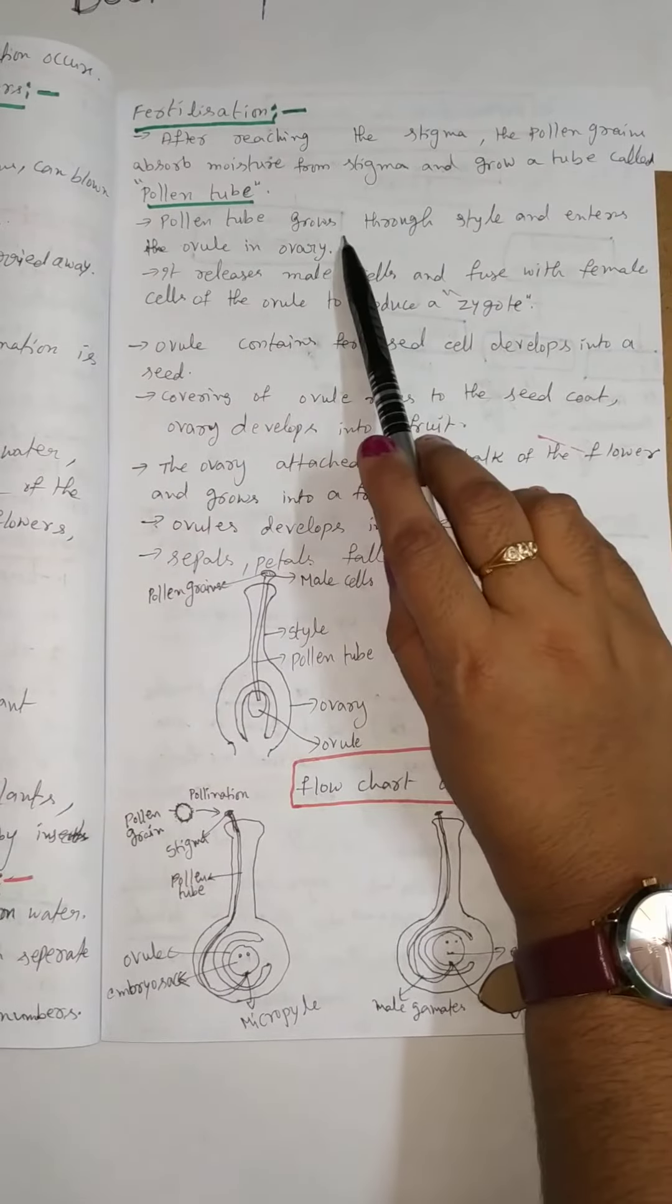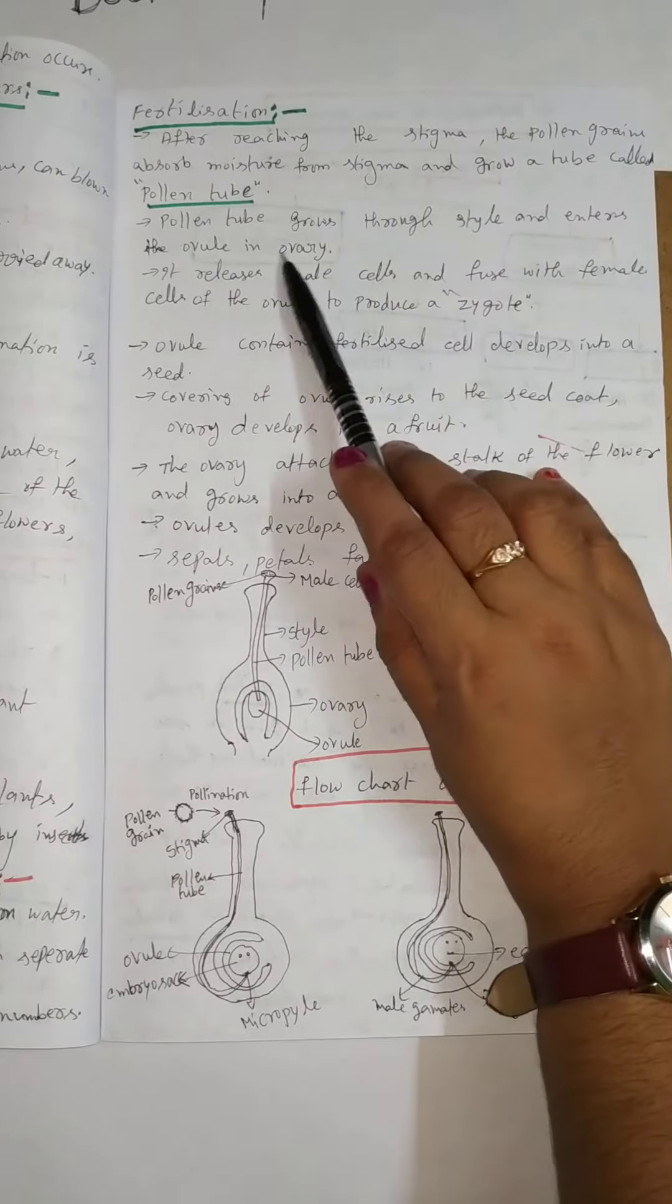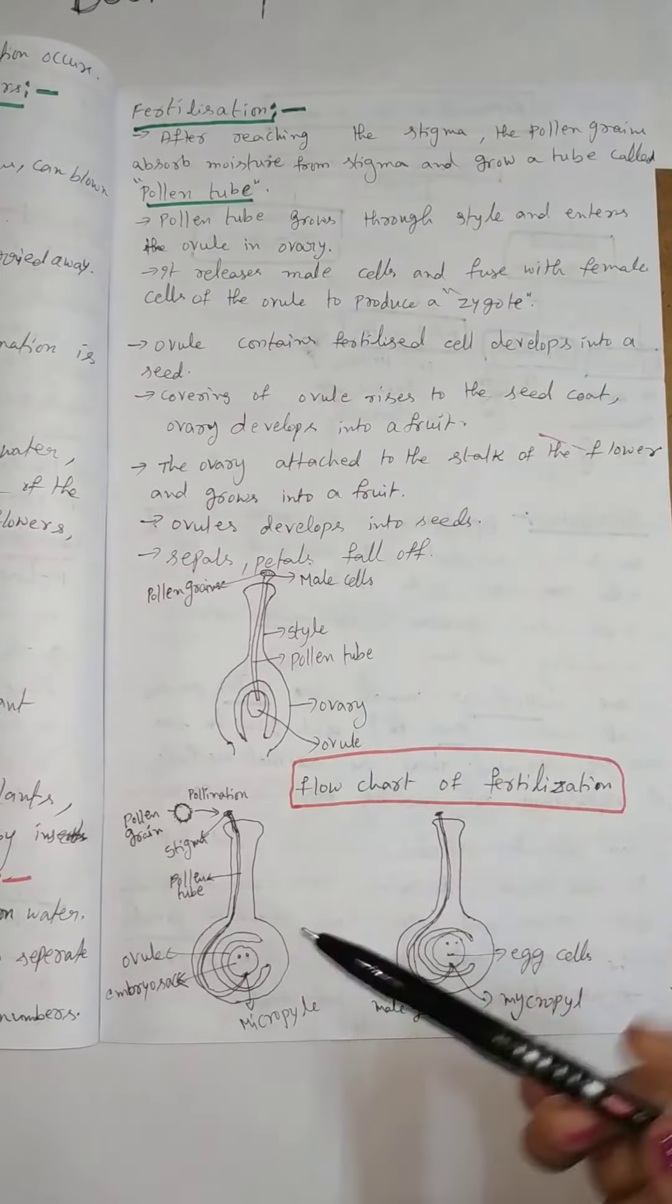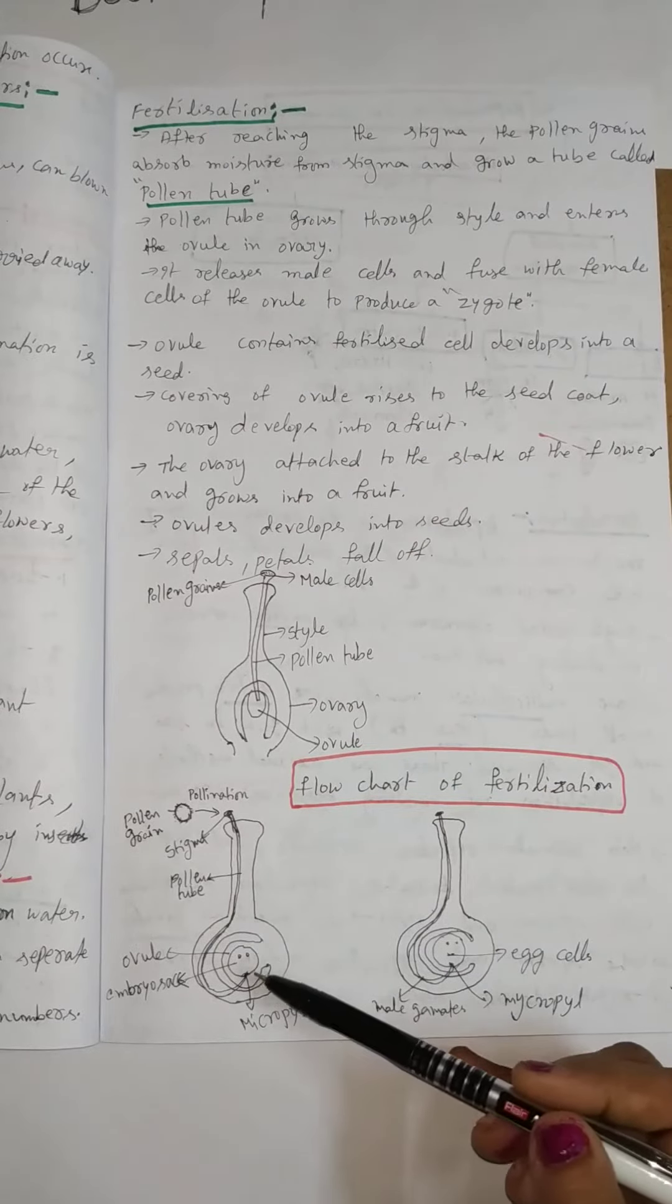The pollen tube grows through the style and enters an ovule in the ovary. The pollen tube enters into the ovary.